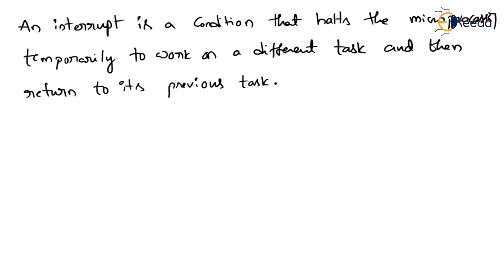There are two different types of interrupts: maskable interrupt and non-maskable interrupt. Maskable means we can ignore that interrupt at that time. For example, while I am teaching, if my mobile phone rings, I can ignore it — I can mask that interrupt — because the class is more important. Later I will handle that call after completion of my class.